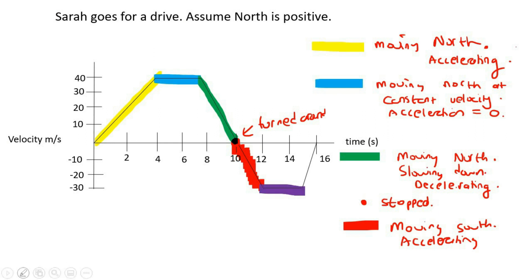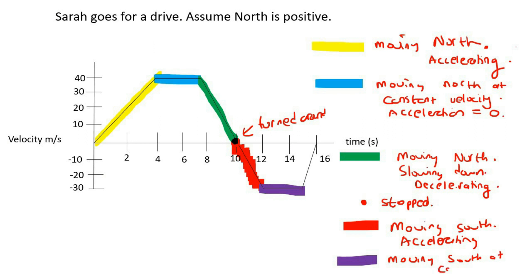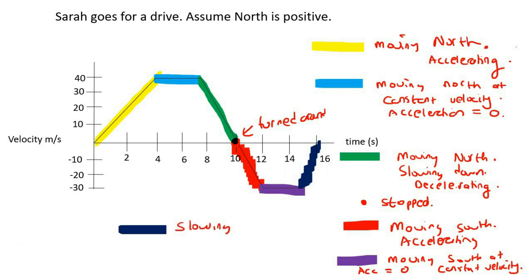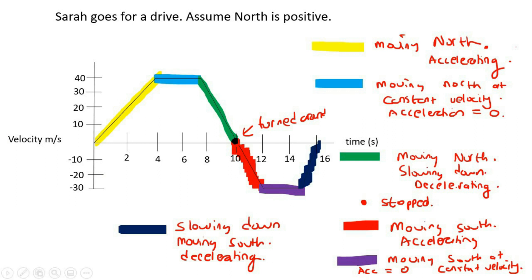Remember, Sarah's not standing still here — her velocity is negative 30, so she's moving south at a constant velocity, and the acceleration in that area is zero. Then in the final section, the velocity values go from minus 30 to minus 20 to minus 10, so the magnitude is going from 30 to 20 to 10 — she's slowing down, moving south, and decelerating. Let's go do some questions on this graph.